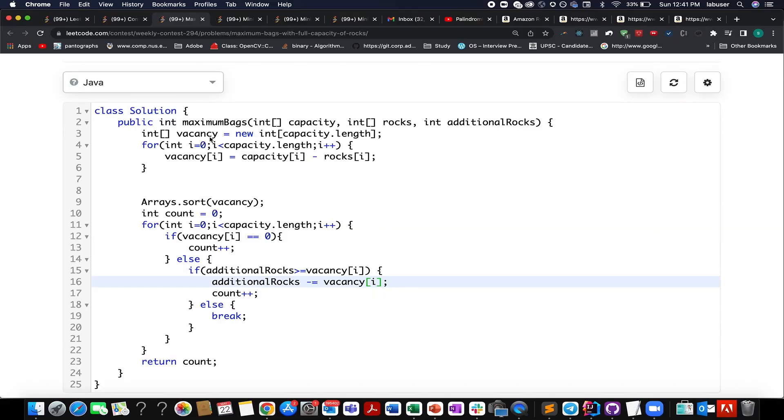As told in the presentation, my first step is to create the vacancy array and the size of the vacancy array would be equal to the number of bags that I have. I iterate over the capacity and the rocks array that is given to me and I appropriately calculate the vacancy for each bag that is given to me. So it would be equal to capacity minus current rocks that are there in the bag. And once I have done this, what do I do? I sort this vacancy array in increasing order.